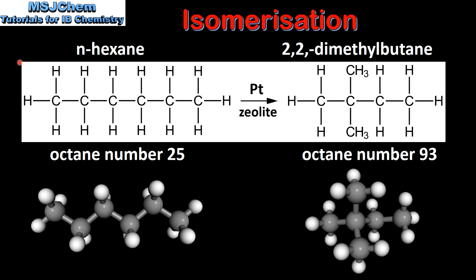Let's look at one more example. Here we have N-hexane, which is a straight-chain hydrocarbon, being converted into its branched isomer 2,2-dimethylbutane. If we compare the octane numbers, 2,2-dimethylbutane has an octane number of 93, and the straight-chain isomer has an octane number of 25.